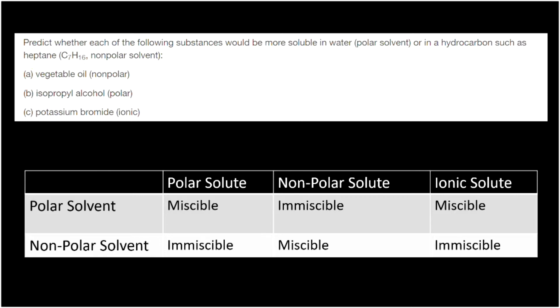Let's do one more practice problem: indicate if the following combinations would be miscible or immiscible. We'll identify each compound as polar, nonpolar, or ionic, then apply like-dissolves-like. Tips: OH indicates polarity; just carbon and hydrogen is nonpolar; metals and nonmetals make ionic compounds; and if something is made of just one atom type, it's nonpolar. Chlorine — two chlorine atoms bonded to each other — has no electronegativity difference, so it's nonpolar. Bromine, similarly made of all bromine, is also nonpolar. Since they're both nonpolar — similar to each other — they're going to make a nice miscible solution.